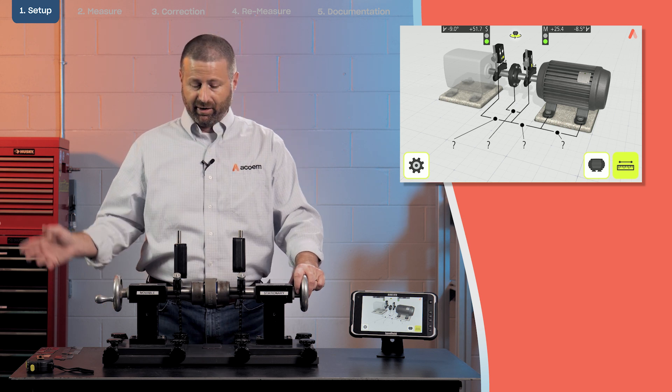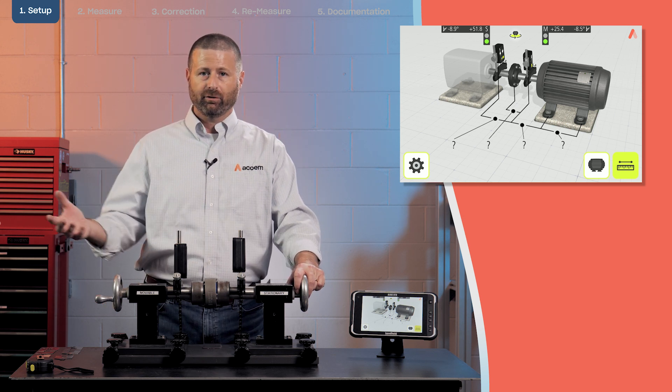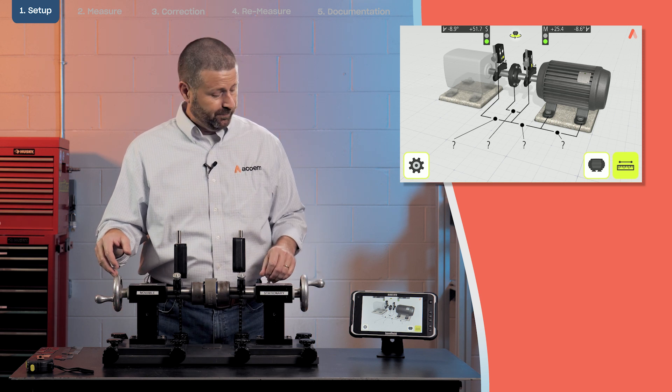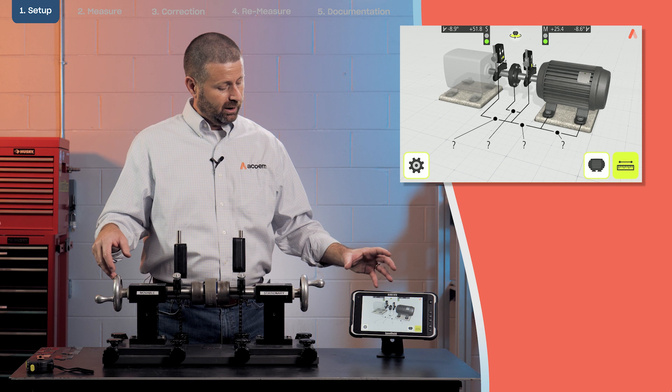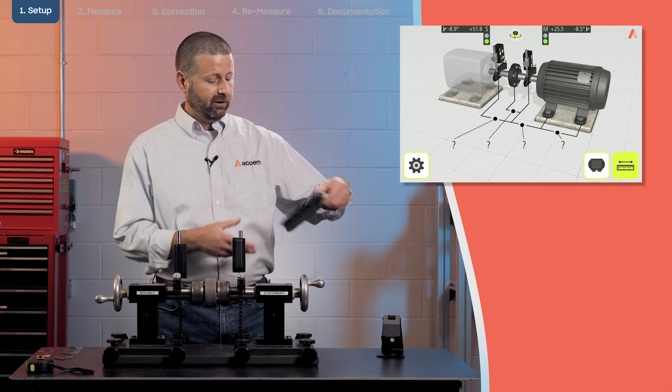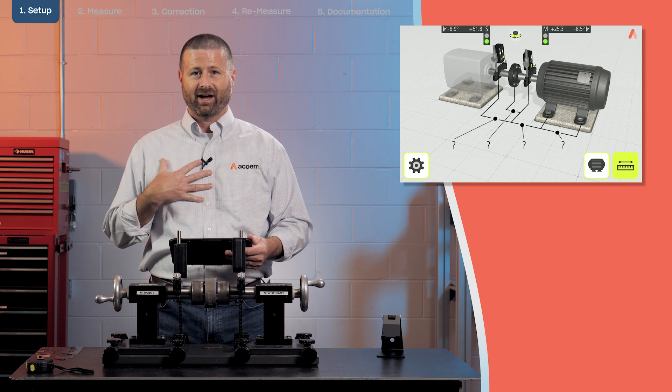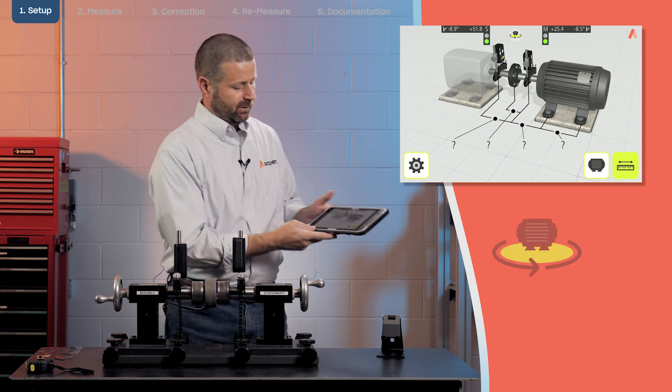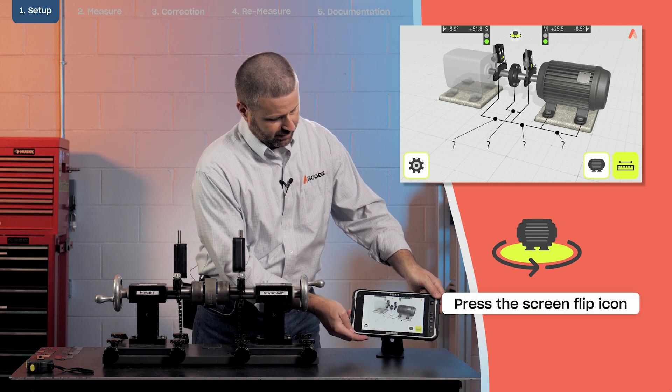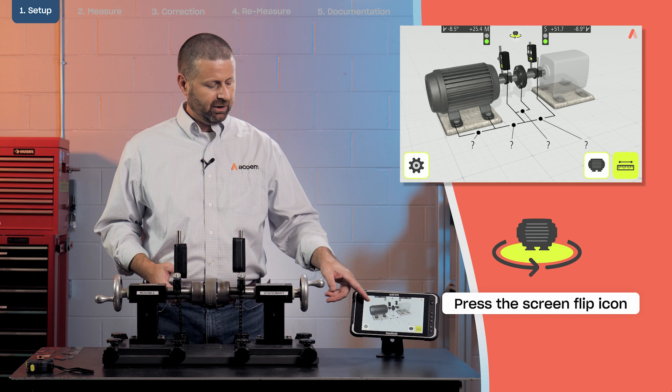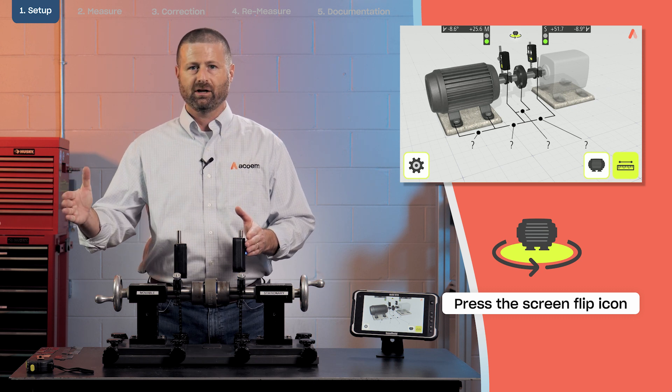Now that I have everything set up we can go through a precision shaft alignment. The first thing I'm going to do is this display is currently oriented as if you were standing on my side of the machine. What I'm going to do for the sake of the camera is reorient the picture so that the motor or the movable machine is oriented for the camera side of the demonstrator.